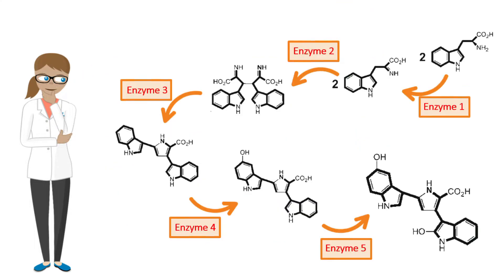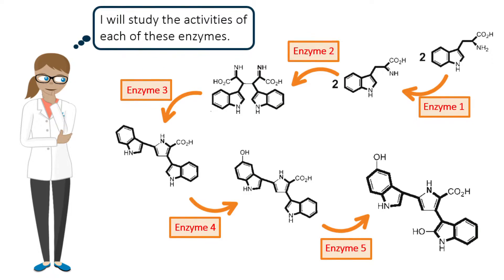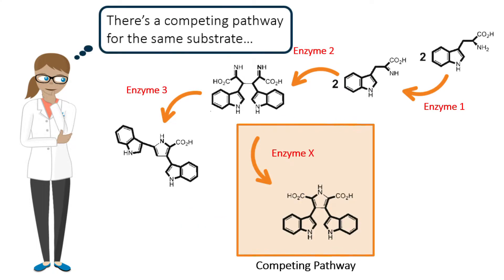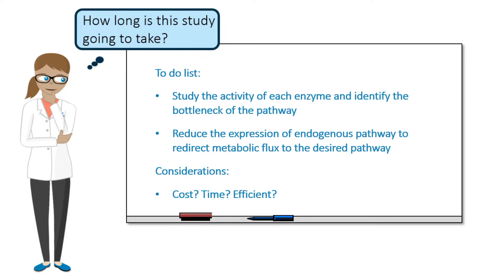In a different approach, Amy could instead study the biochemistry and properties of each of the five enzymes to better understand the metabolic flux of each enzyme to guide her design. By understanding the activity of each enzyme and its role in the pathway, Amy could identify which of the five enzymes is a bottleneck and improve its expression by using a strong promoter. Amy could also identify endogenous processes that are competing for the same substrate in the pathway and reduce its expression through a knockout. This will allow Amy to better design her engineered bacterial cell by redirecting the metabolic flux to produce the desired product. But how long would this experimental study take, and how much would it cost to conduct these extra experiments?